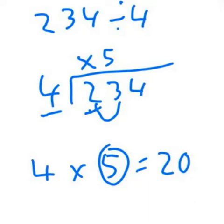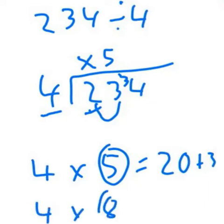And how many do we need to go from 20 to 23? We need to add 3. So there's 3 remainders. And then 4 into 34, exact same thing. I know that 4 times 8 equals 32. But I need it to be 34, which means I've got to add 2 to be 34. So I put my 8 here,